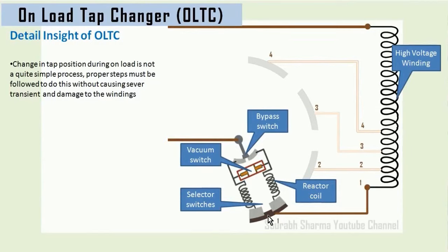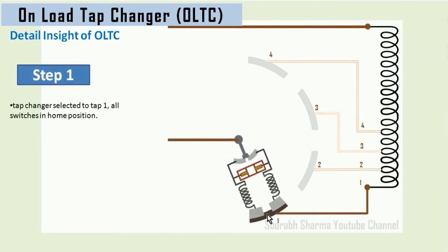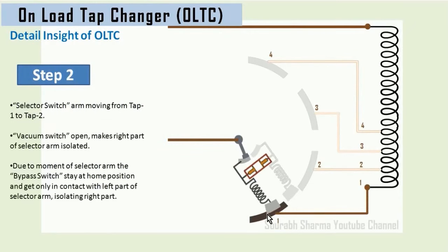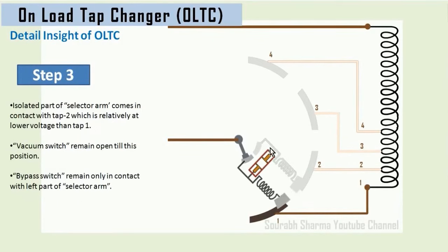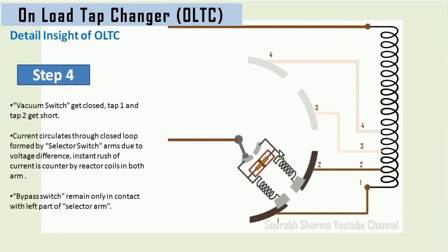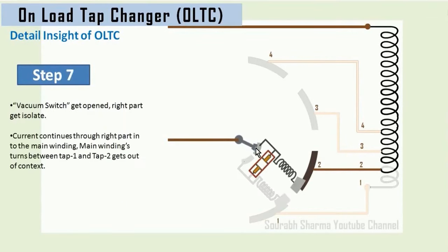The arm is connected on tap 1. When the output voltage of the secondary winding gets reduced due to heavy load, the arm must shift from tap 1 to tap 2, because the active number of turns at HV must be reduced to increase the secondary voltage. The sequence followed is: first, the front part — the selector arm — moves a bit so that the right part gets freed from tap 1, as the vacuum switch is already open, and now there is no voltage on the right part. Due to further movement, the right part gets in contact with tap 2, which is at slightly less voltage than tap 1. Now the vacuum switch operates so that tap 1 and tap 2 get in contact and the voltage of both taps becomes equal. Due to this sudden closed circuit, a current circulates in the loop, which is limited by the reactor coils. Now the bypass switch can completely move to the right part and the vacuum switch becomes open, isolating the left part and therefore tap 1.